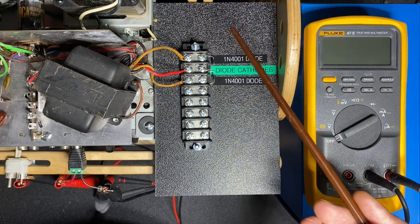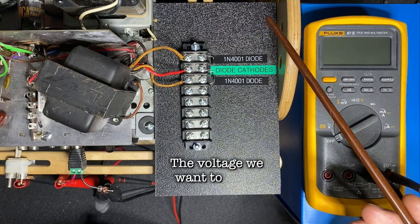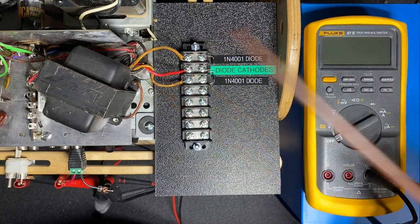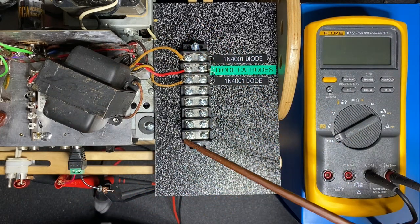Now to calculate what size dropping resistor we need we can use Ohm's law and Ohm's law states that voltage divided by current gives us resistance. So far we know that our voltage is 1.5 volts but we don't know our current so let's use the fluke meter now to determine how much current is flowing through the circuit.